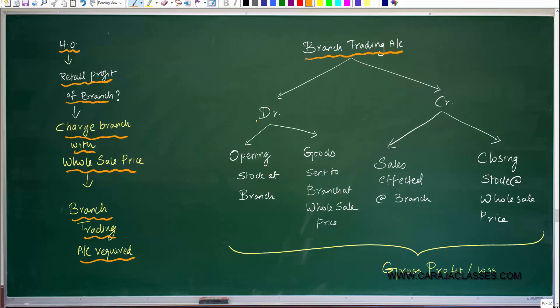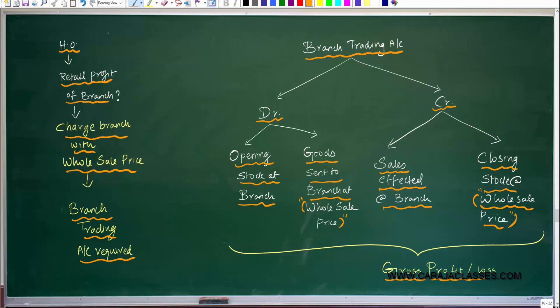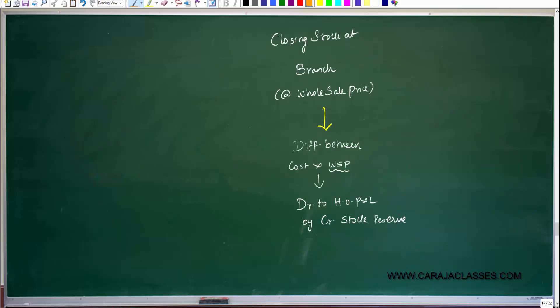This branch trading account will be debited with opening stock at branch, then goods sent to branch at wholesale price. The branch trading account will be credited with the sales affected at branches, then closing stock at wholesale price. The difference between the debit and credit side will communicate what is the gross profit or loss of the branch. This gross profit or loss will then be transferred to the branch P&L.